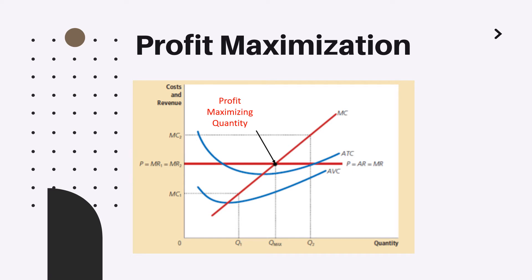On the other hand, at quantity Q2, where marginal costs are higher than marginal revenues, the company increases its loss per each product — it spends more than it earns as revenue. Thus the company will be incentivized to decrease production and reduce quantity to decrease losses. In both scenarios, the company will steadily move to the center: the quantity at which marginal costs equal marginal revenue, or equivalently, marginal costs equal price.